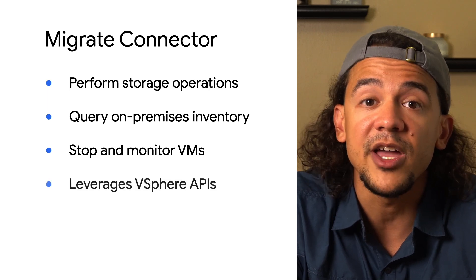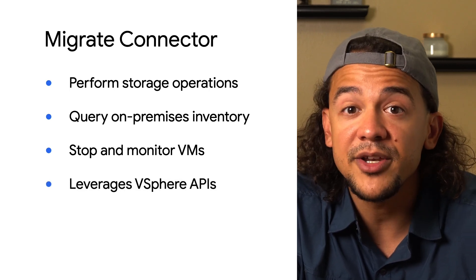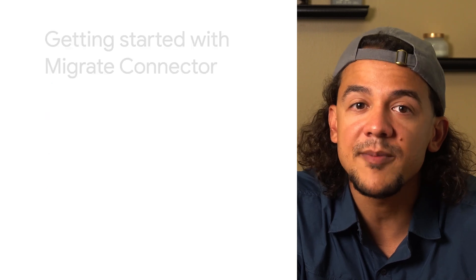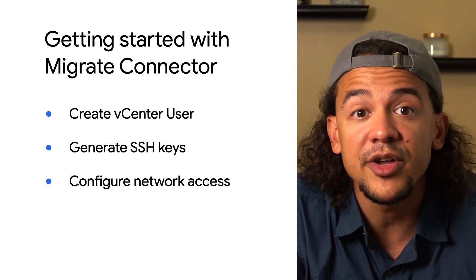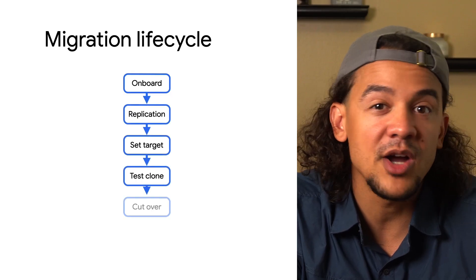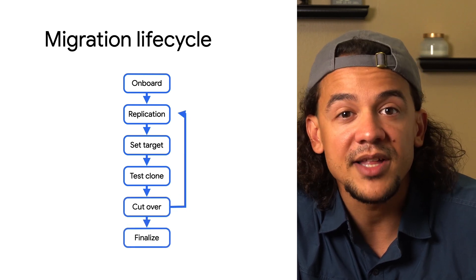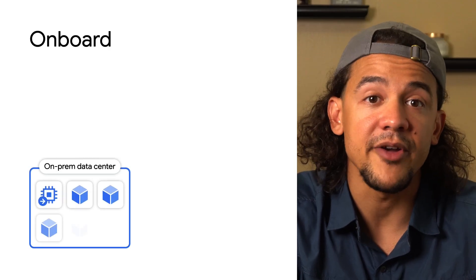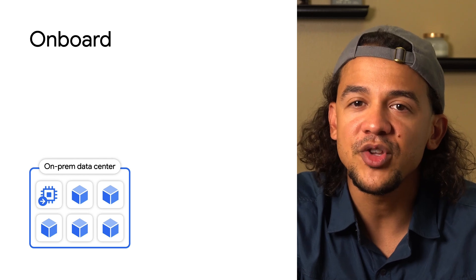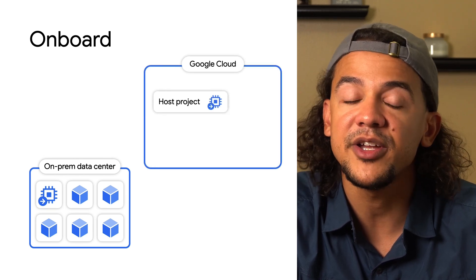To get Migrate Connector going, there are some prerequisite steps you'll need to complete, like creating a vCenter user, generating SSH keys, and configuring network access. Once you've got Migrate Connector and your host project all set up, the migration process can begin going through its six phases. Phase one: onboarding. This is when you'll choose which VMs you're going to migrate. The list of virtual machines that are available will appear on the console thanks to the Migrate Connector.